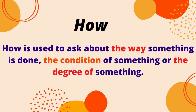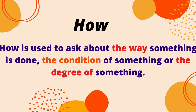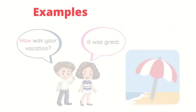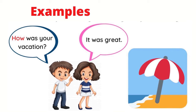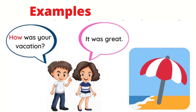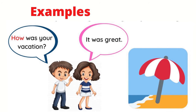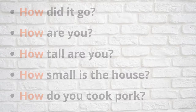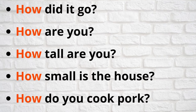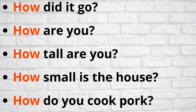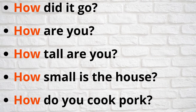Next we look at HOW. HOW is used to ask about the way something is done, the condition of something, or the degree of something. Examples: How was your vacation? It was great. Other examples: How did it go? How are you? How tall are you? How small is the house?